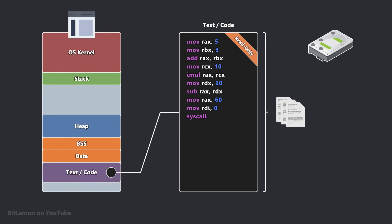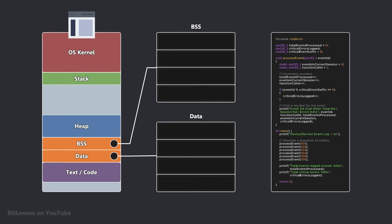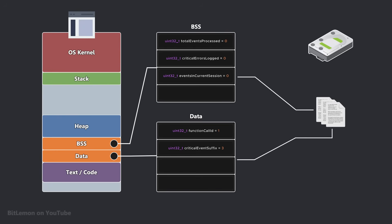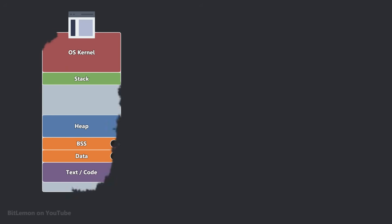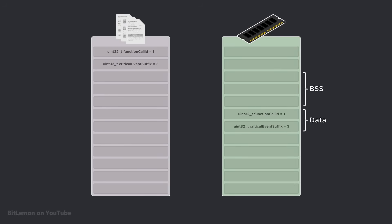The size of this region exactly matches the required space to load the entire code of the program. The data and BSS segments contain global and static variables. The data segment stores initialized variables, while the BSS segment stores uninitialized variables. This separation reduces the size of the executable file: initialized variables must be explicitly stored in the file, but uninitialized variables are automatically initialized with a value of 0 when loaded into memory, so they don't have to be stored in the executable file.